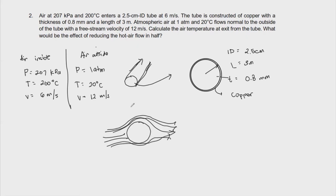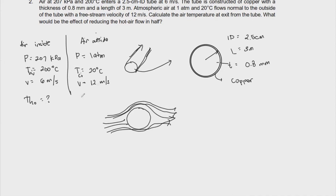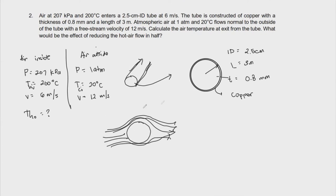Cross-flow is also known as a flow that is normal to the surface. The question here is: calculate the air temperature at exit from the tube. What would be the effect of reducing the hot air flow in half? So what we're looking for is the outlet temperature — let's call it THO — and the inlet conditions as TCI. These are our general conditions given from the problem.